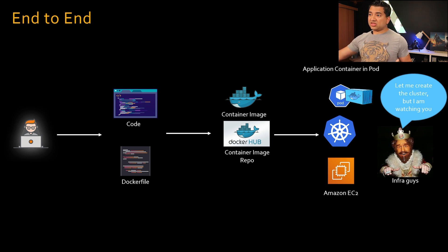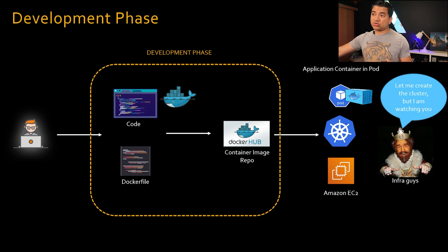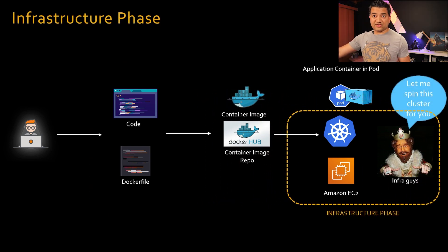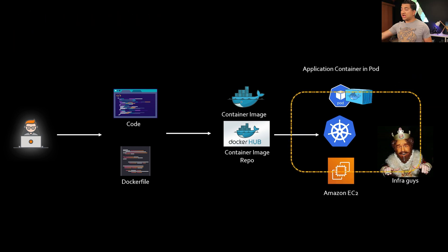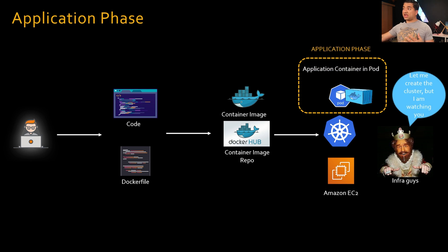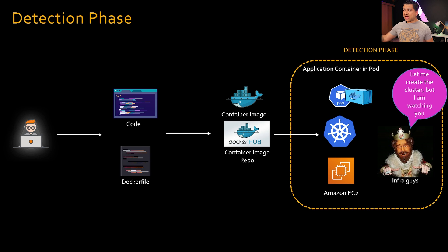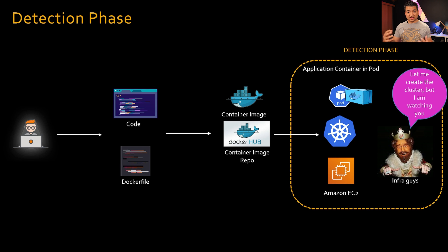For security best practices, we divide this whole end-to-end flow into four different areas — this is how you remember it. The first is the development phase, where you code and Dockerize your application. Next is the infrastructure phase, where the infrastructure team spins up the cluster and selects the Amazon EC2, etc. Then the application phase, where application folks deploy and run the containers. And finally the detection phase — infrastructure watching for suspicious activity. So remember: development, infrastructure, application, detection.